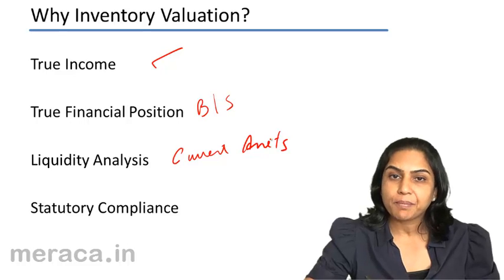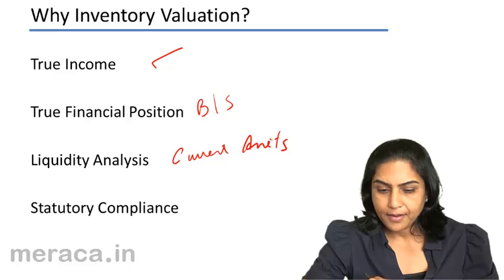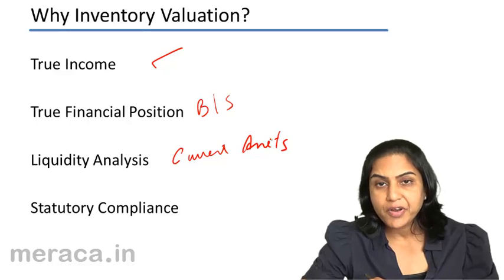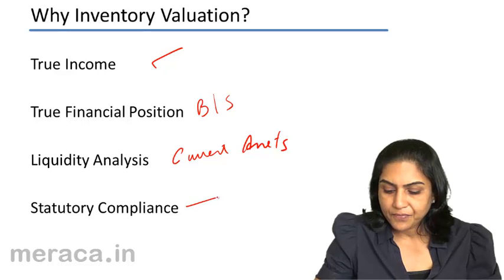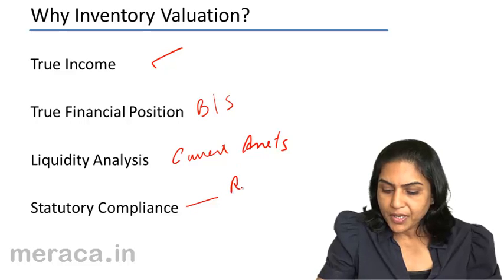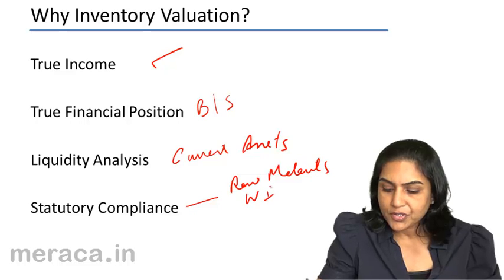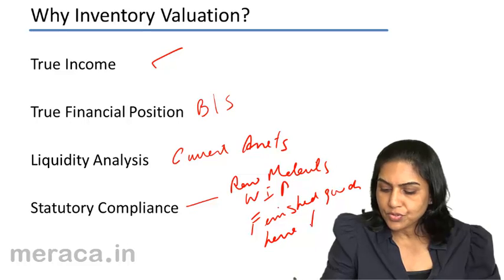Statutory compliance: as per the Companies Act, inventories have to be presented with a suitable breakup, which normally includes raw materials, work in progress, finished goods, loose tools, spares, etc.